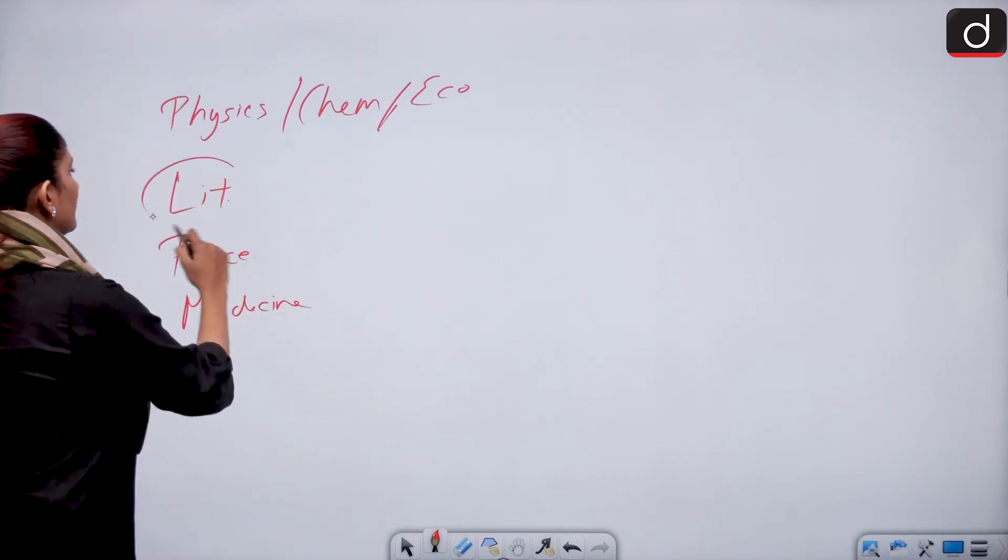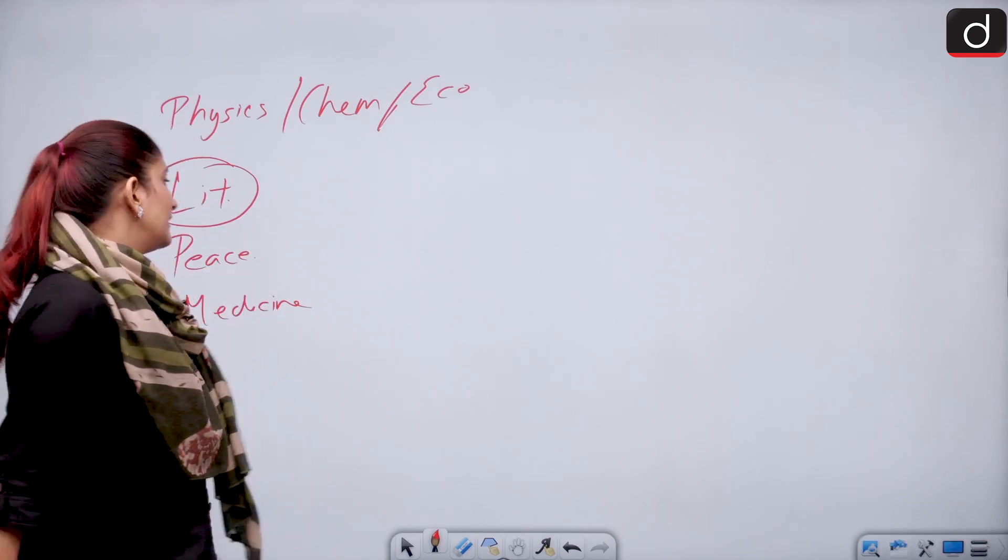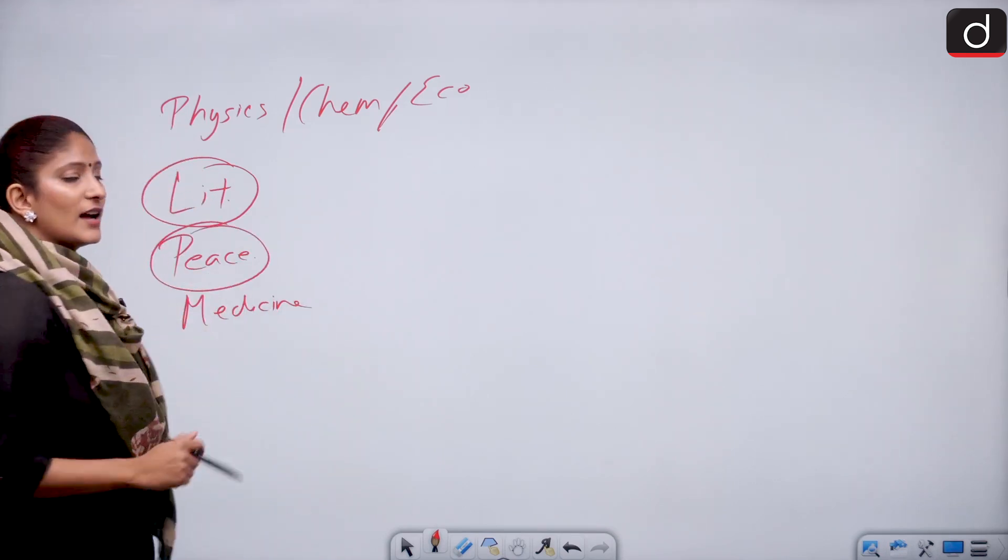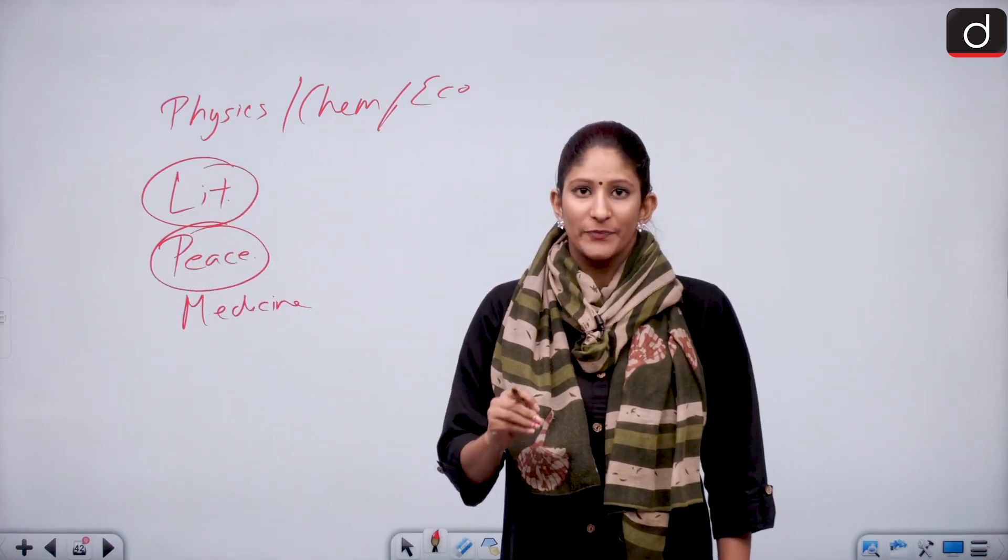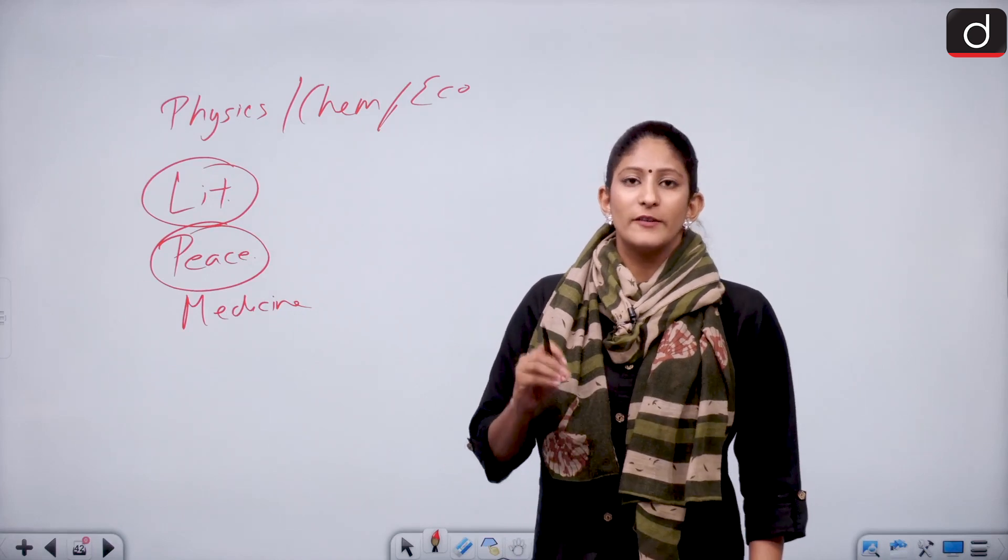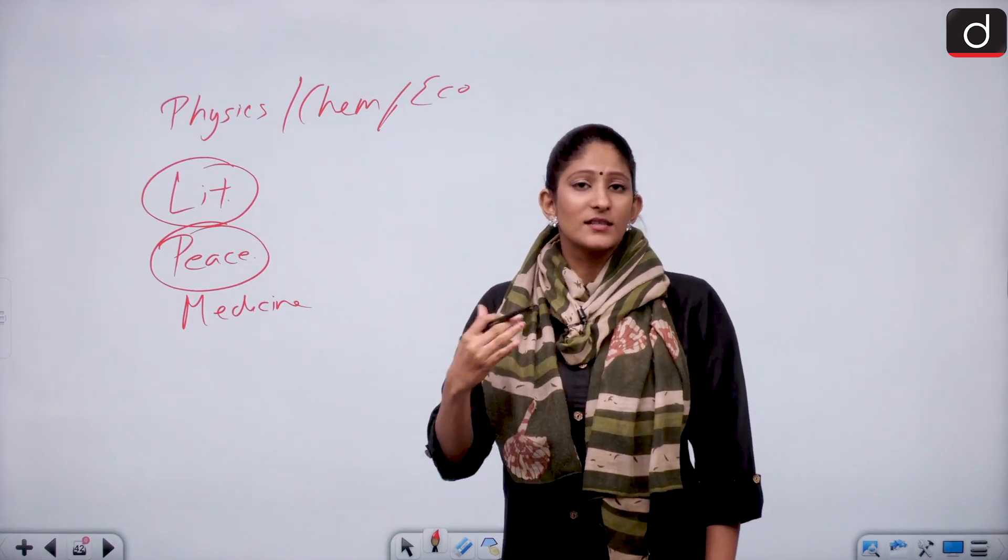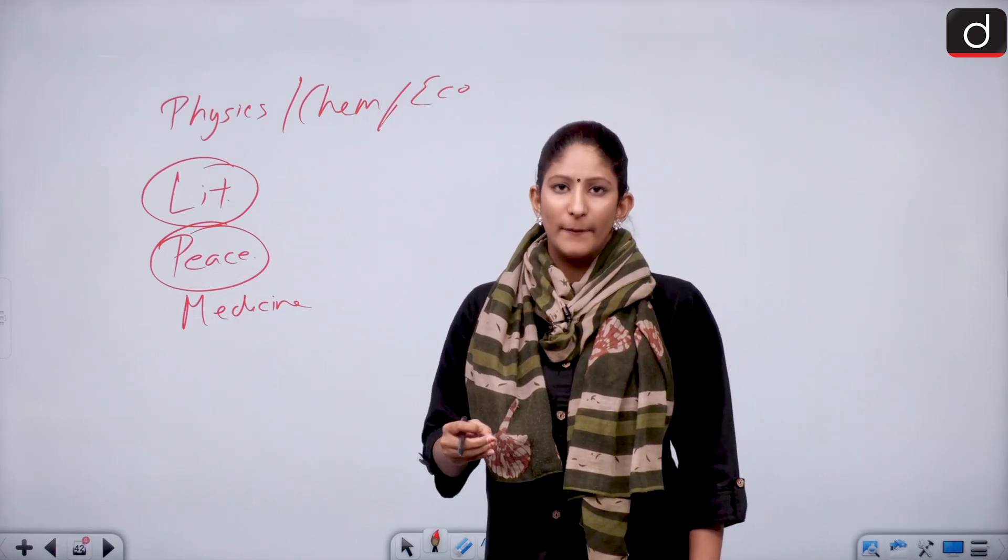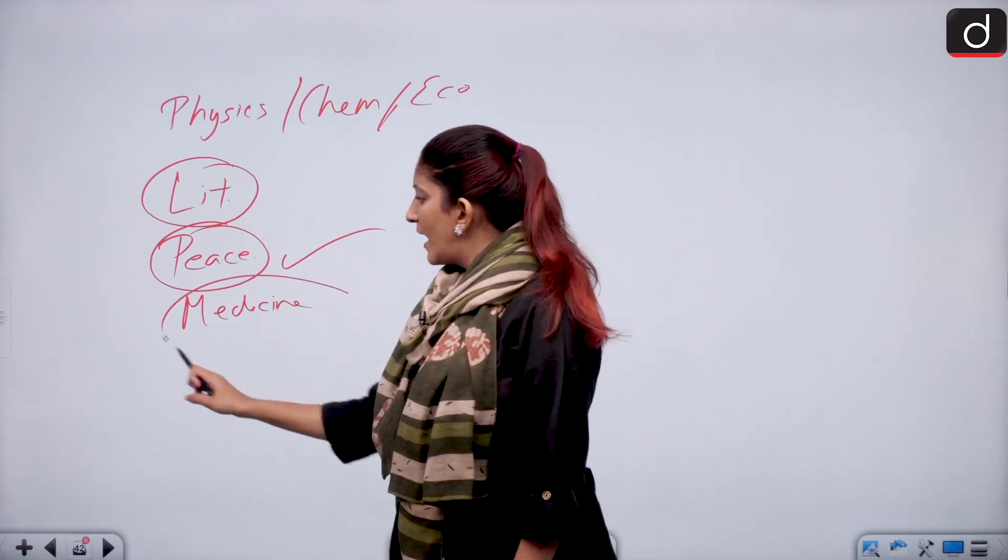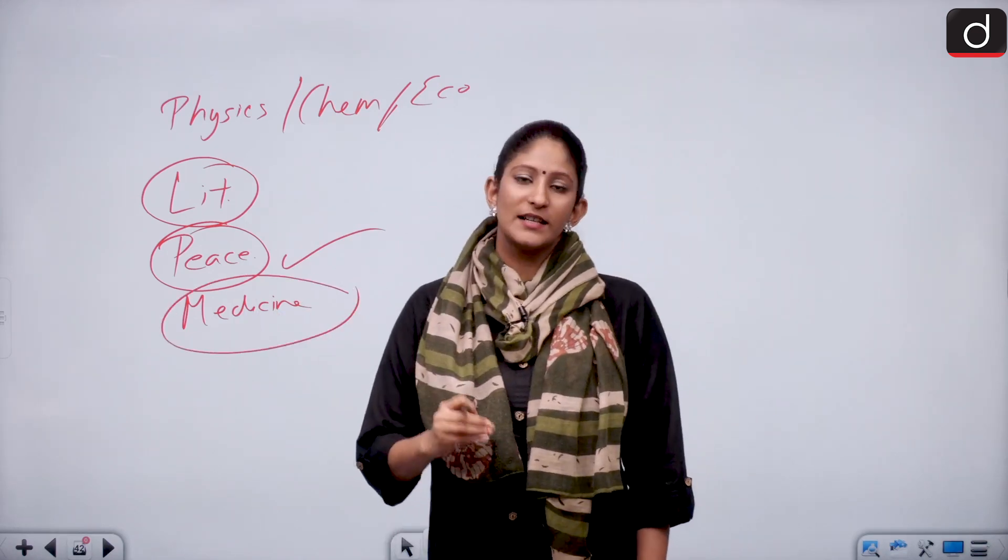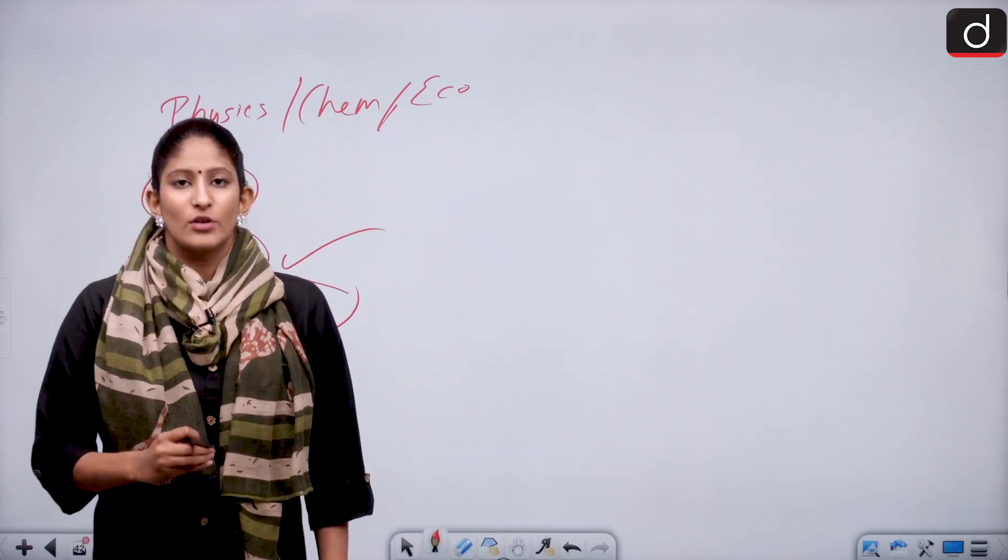The prize in the field of physics, chemistry and economics is given by the Royal Swedish Academy of Sciences. Literature is given by the Swedish Academy. For peace, a committee is created by the Norwegian parliament known as Storting. For medicine, we have the Karolinska Institute. So there are different institutes which actually decide on the winners.